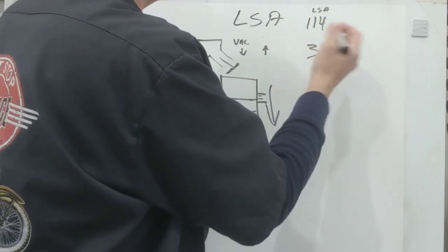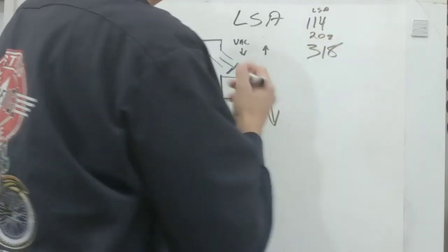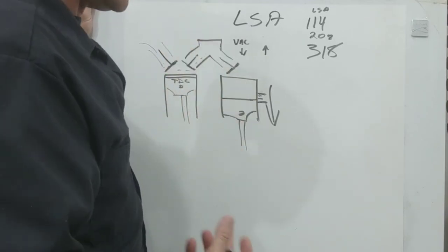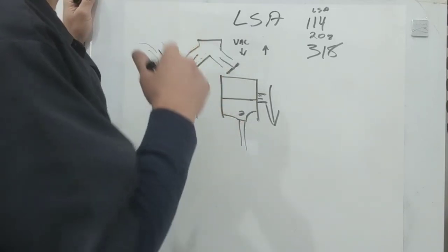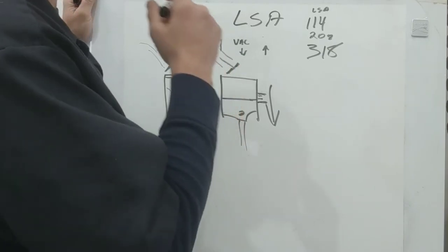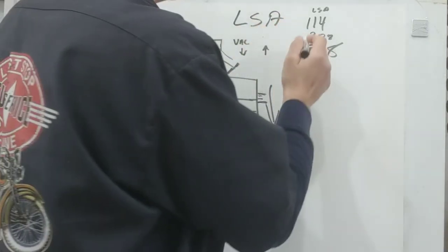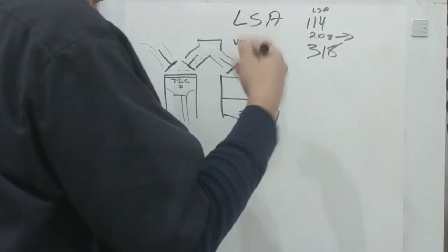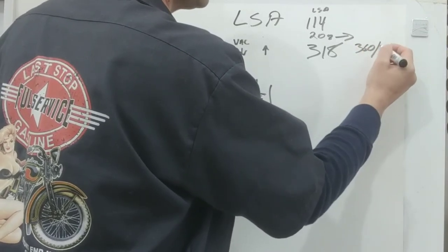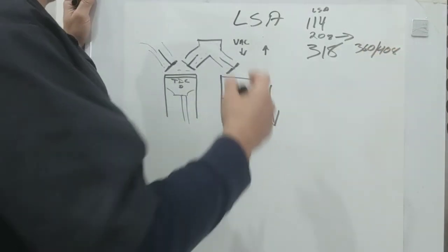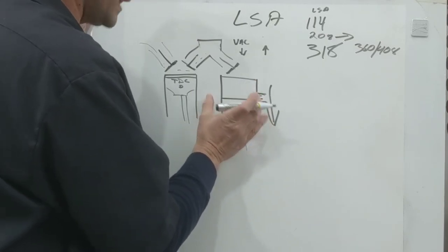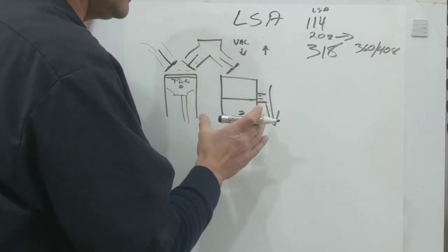Now let's do, let's go to like a 108 LSA. Now what's going to happen is you're going to have less vacuum signal because you have a wider overlap triangle. So we take that same cam and now we up it to a 360, or maybe if you want to stroke the engine, a 408.